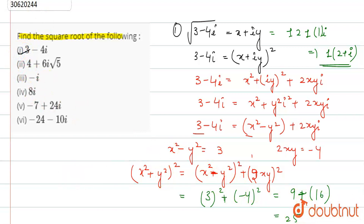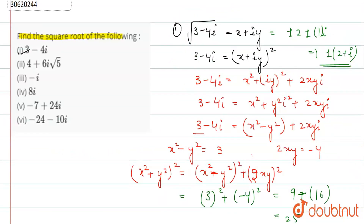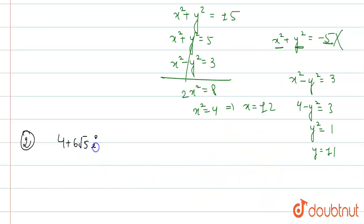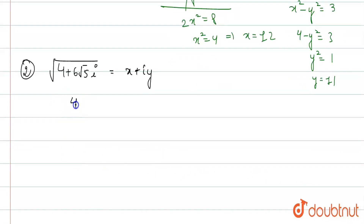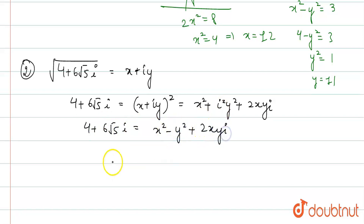Now for the second part: square root of (4 plus 6√5·i). Let x plus iy equal that square root. Squaring both sides: 4 plus 6√5·i equals x squared minus y squared plus 2xyi. Equating parts: x squared minus y squared equals 4, and 2xy equals 6√5.